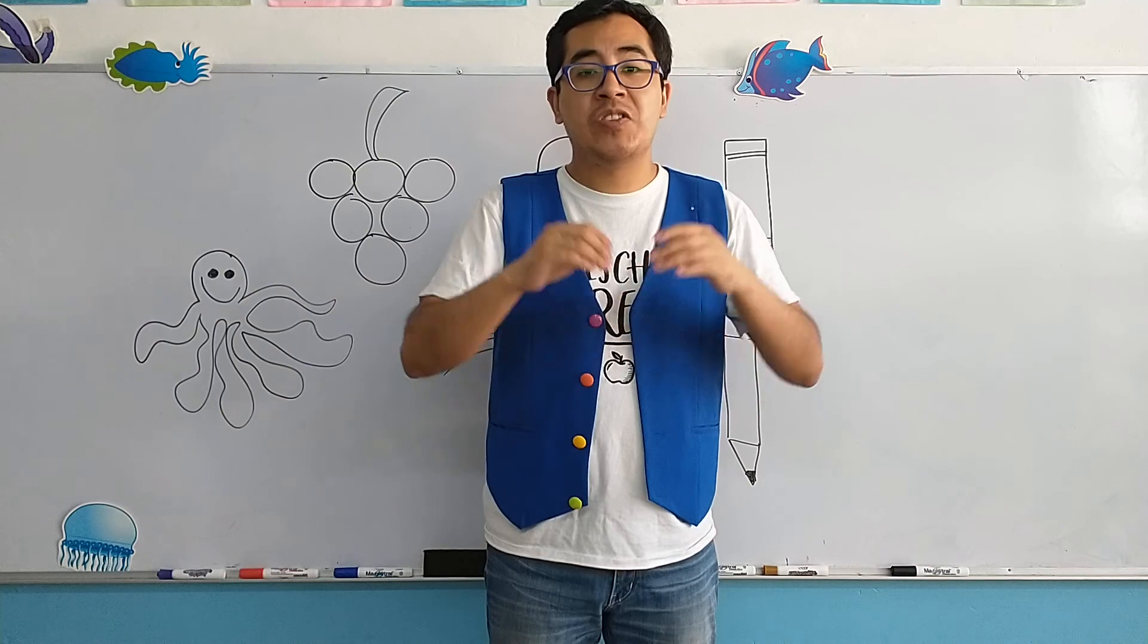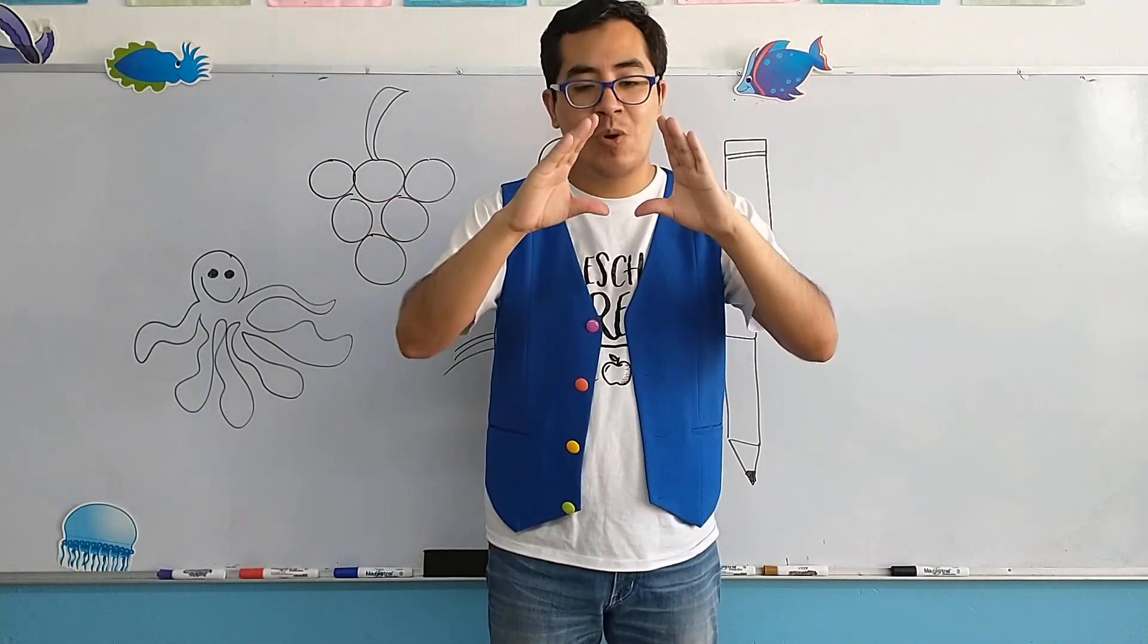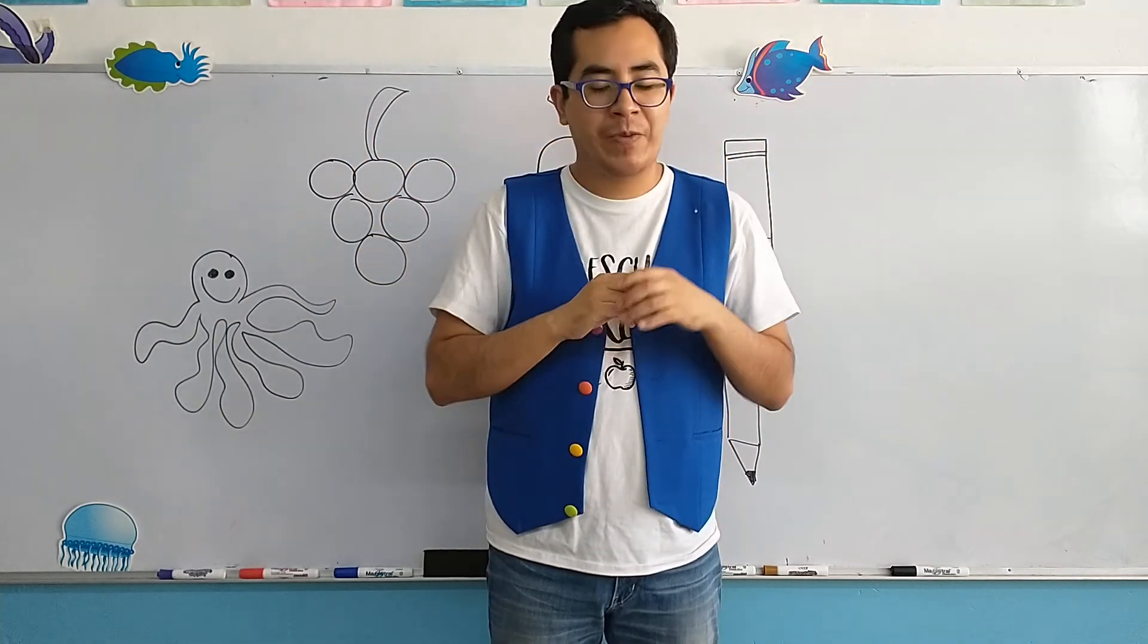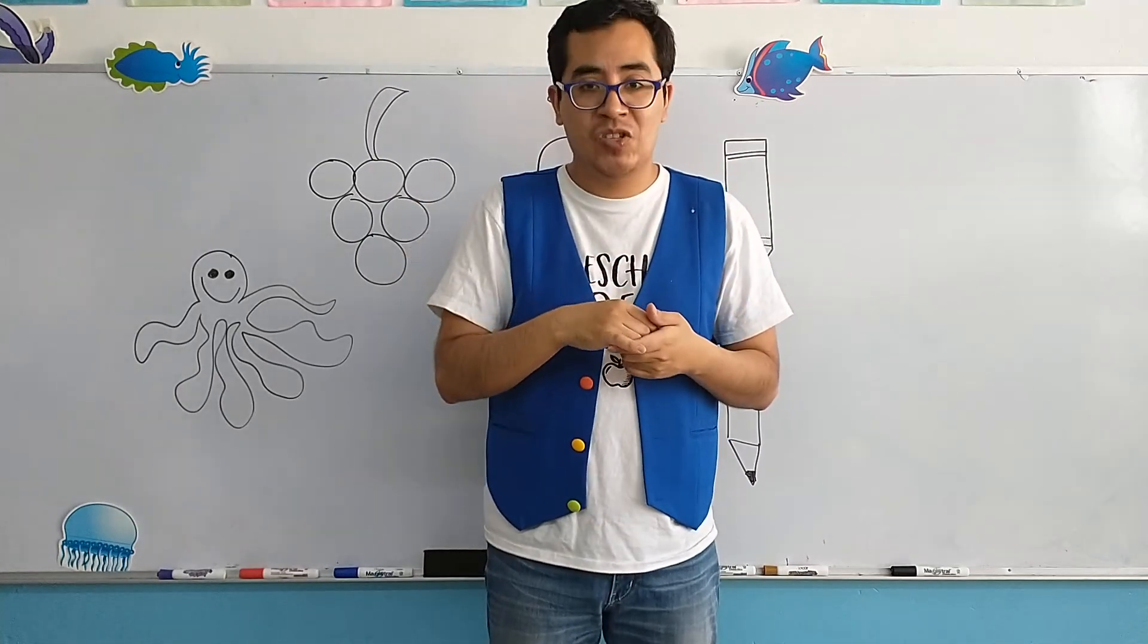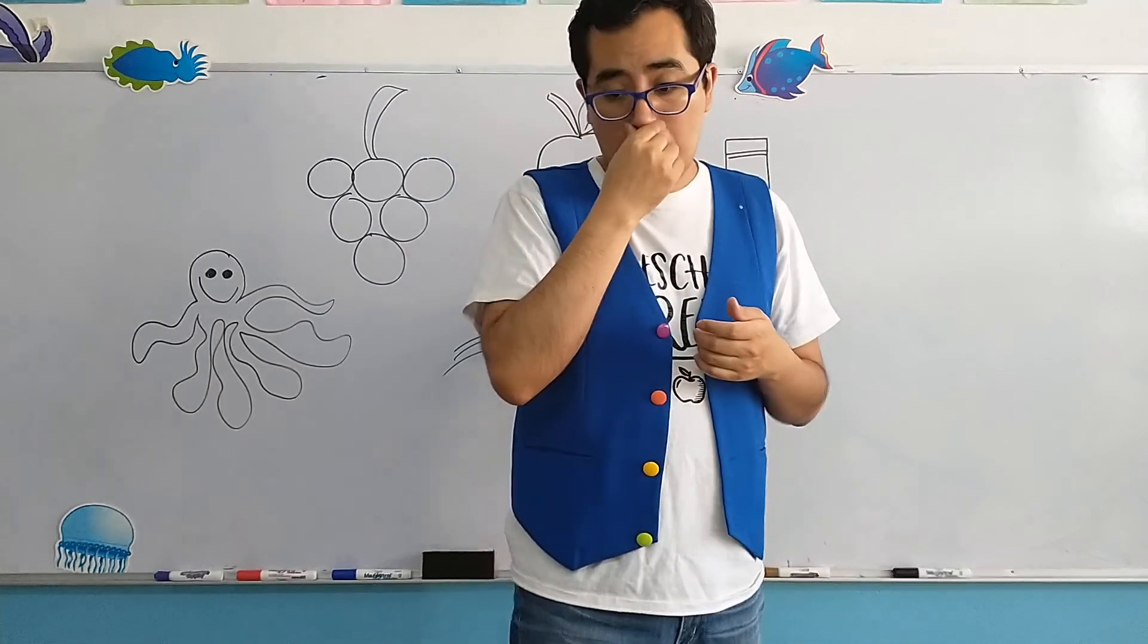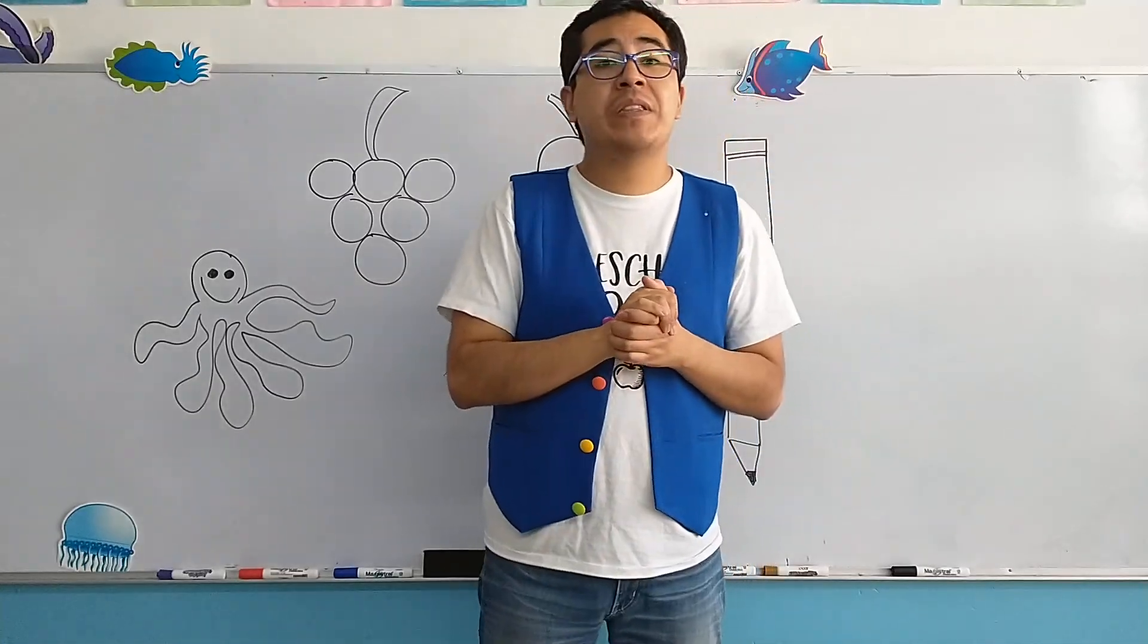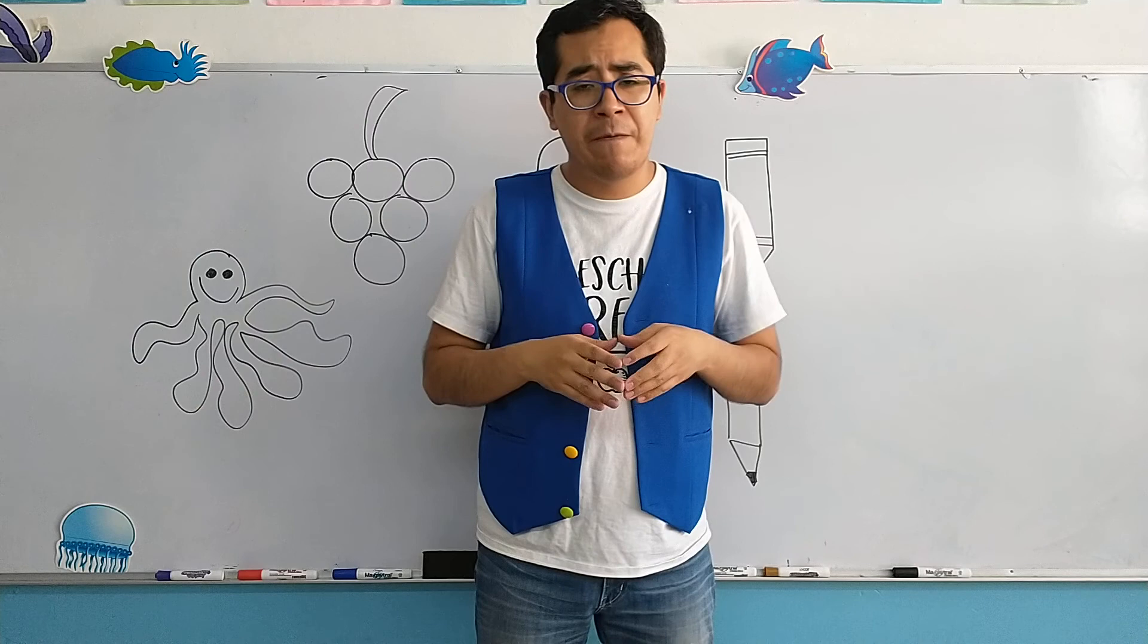Capital letter is big of course, small, minuscula, small. That's the only difference but the form is the same, a circle. Now we saw several objects with this letter. Do you remember some of them?